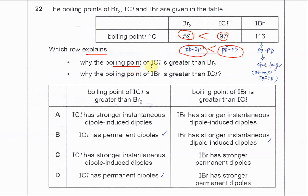So the answer can be B or D. Now the second statement: why is the boiling point of IBr greater than ICl? Now if we compare ICl and IBr, these two molecules are both polar molecules.